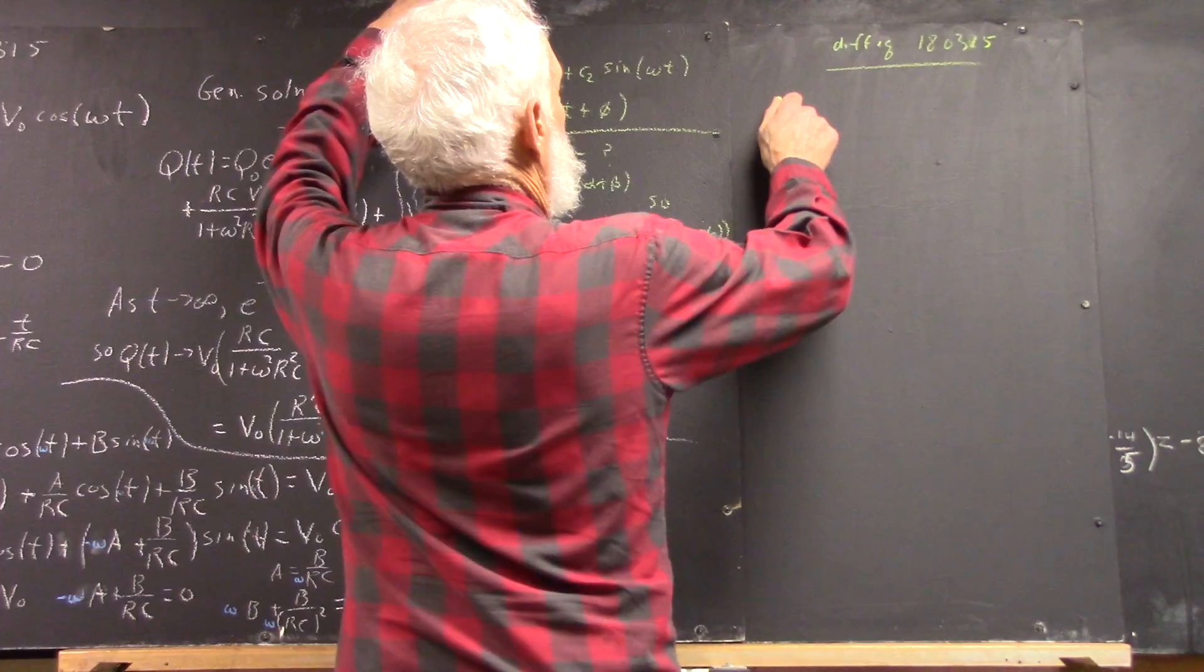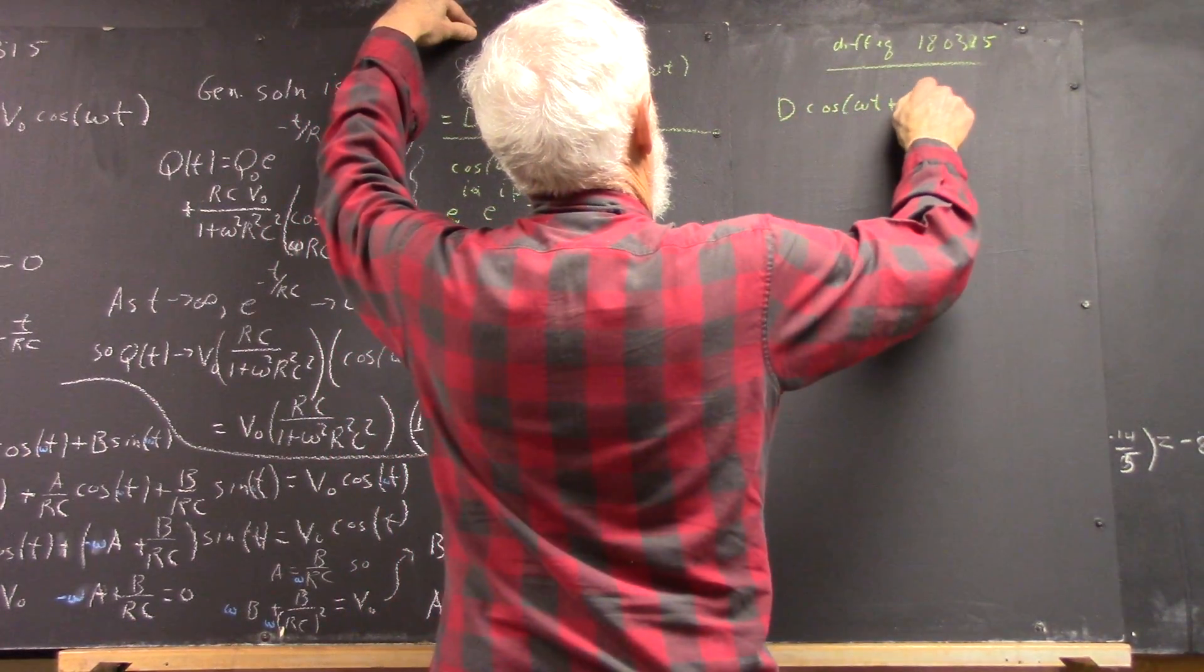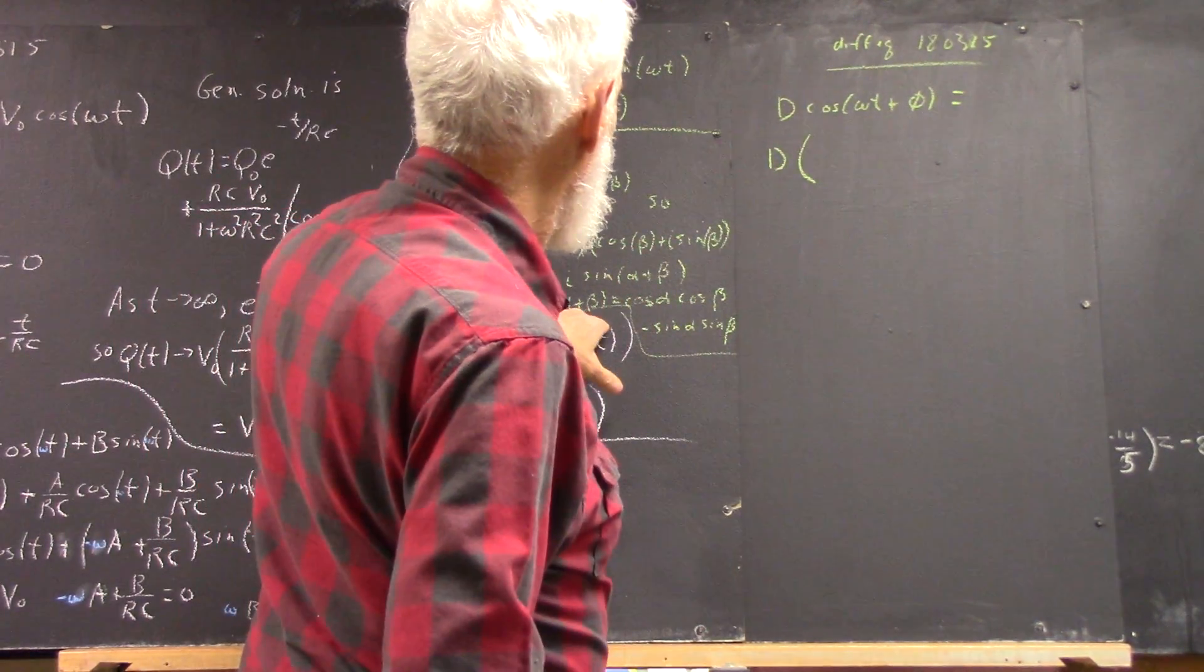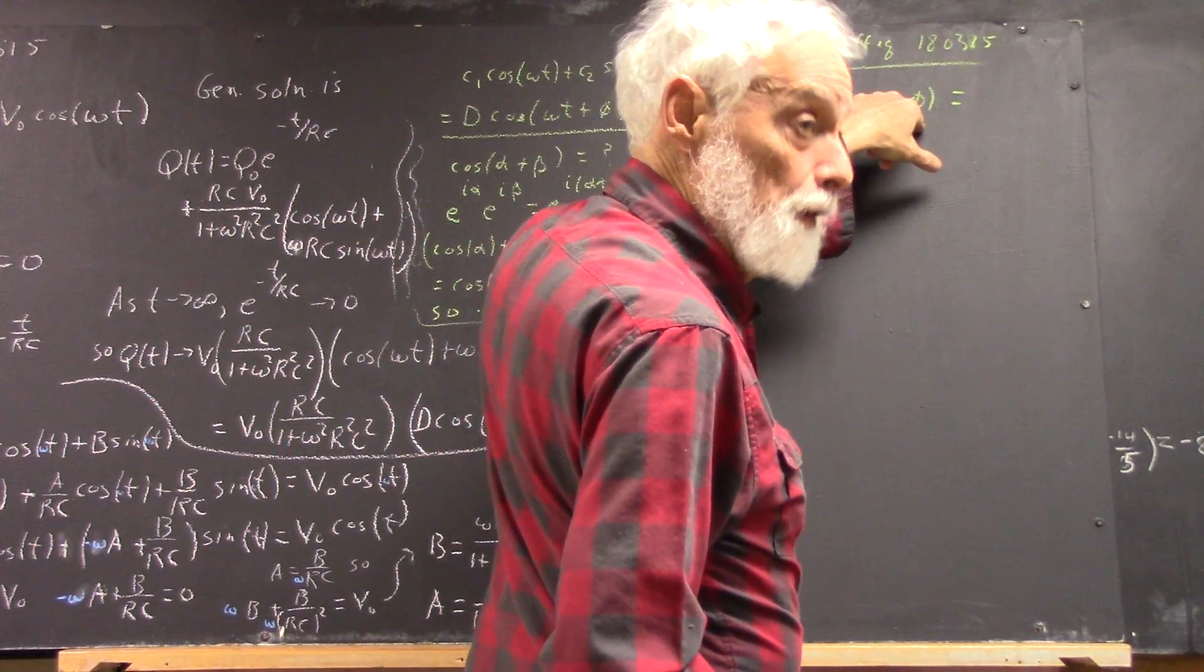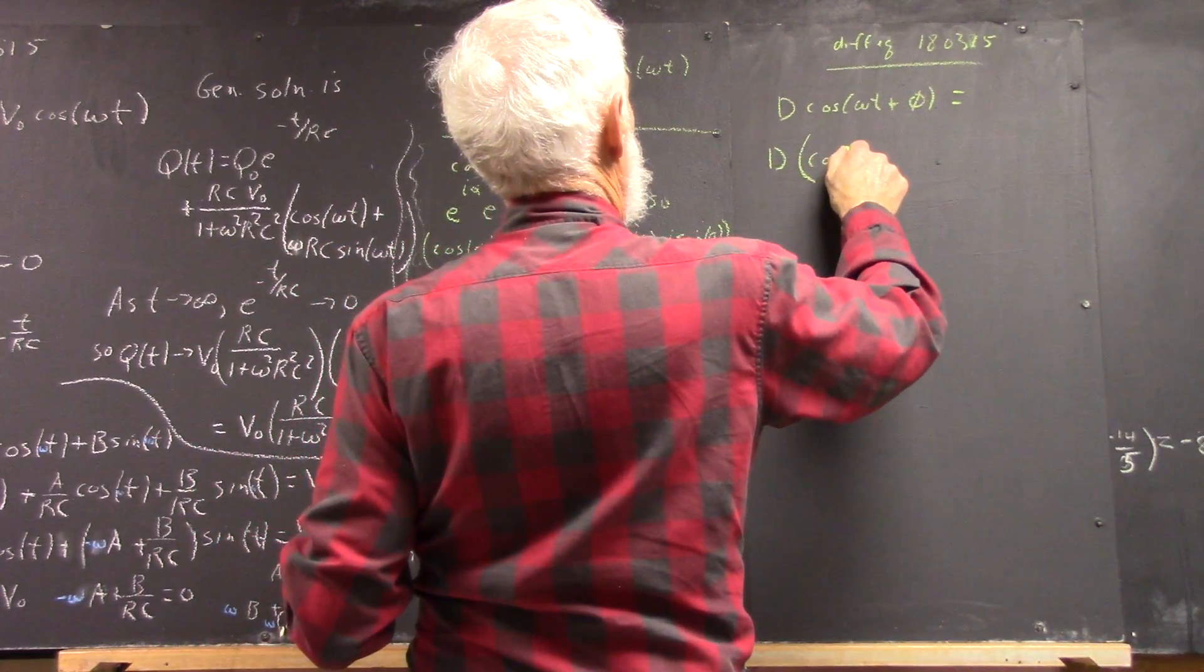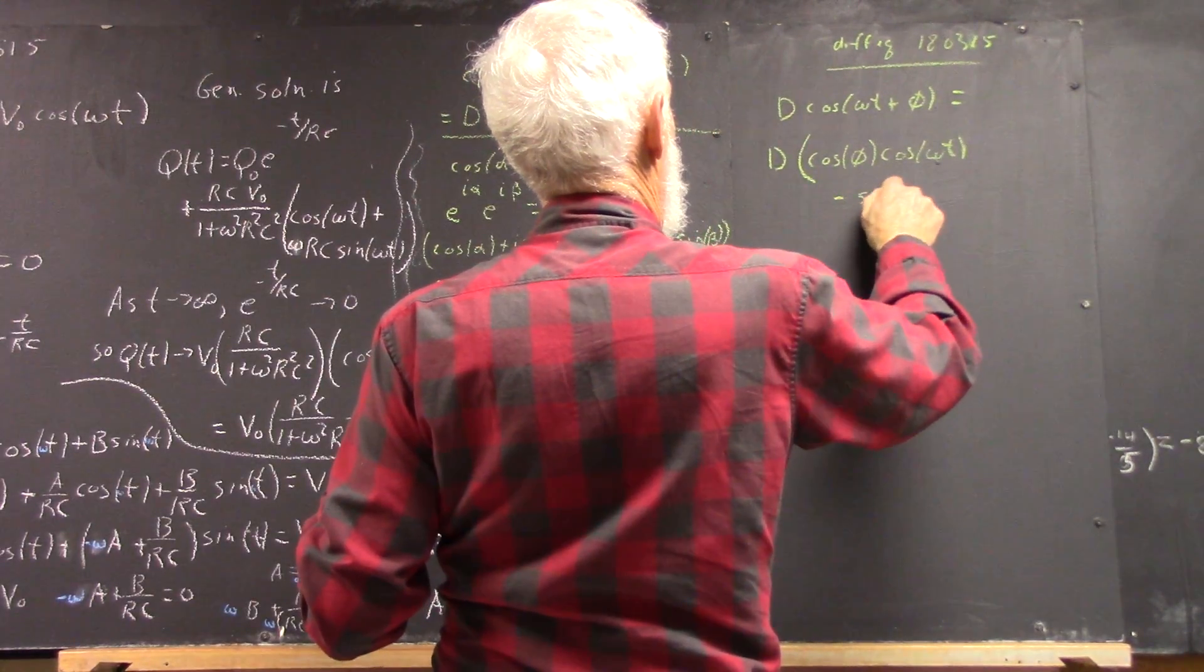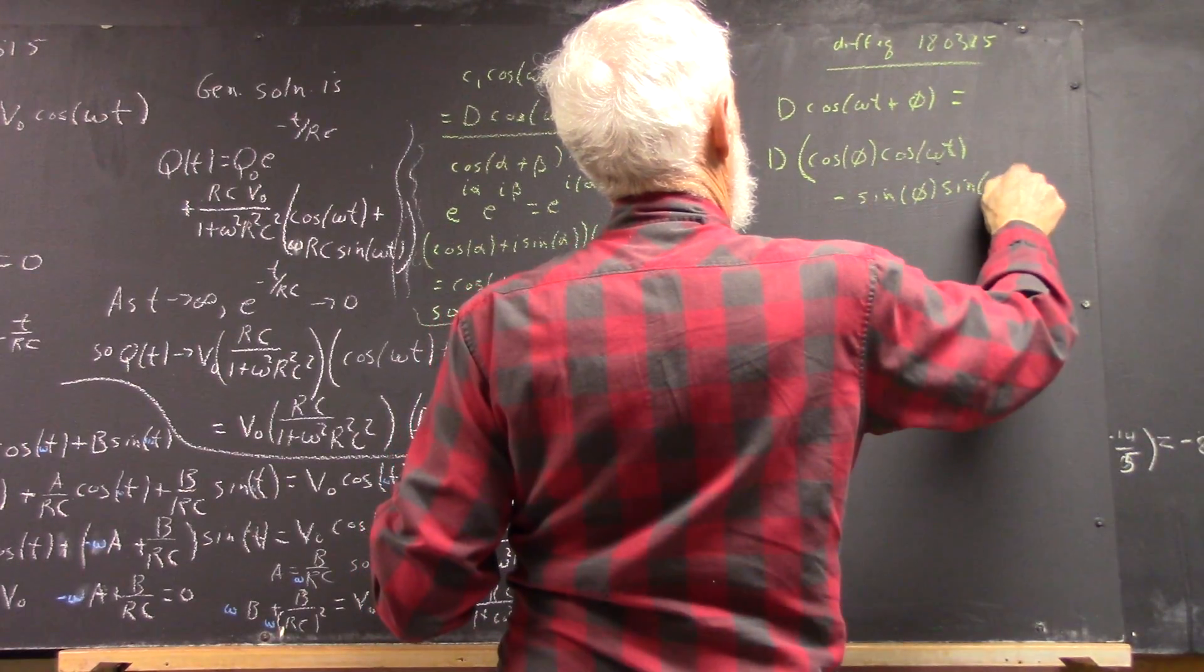So anyhow, this expression then, d cosine of omega t plus phi, is equal to what? Well, it's equal to d multiplied by cosine alpha plus beta. Let omega t be your alpha, let phi be your beta, then you get cosine of phi cosine of omega t minus sine of phi sine of omega t.